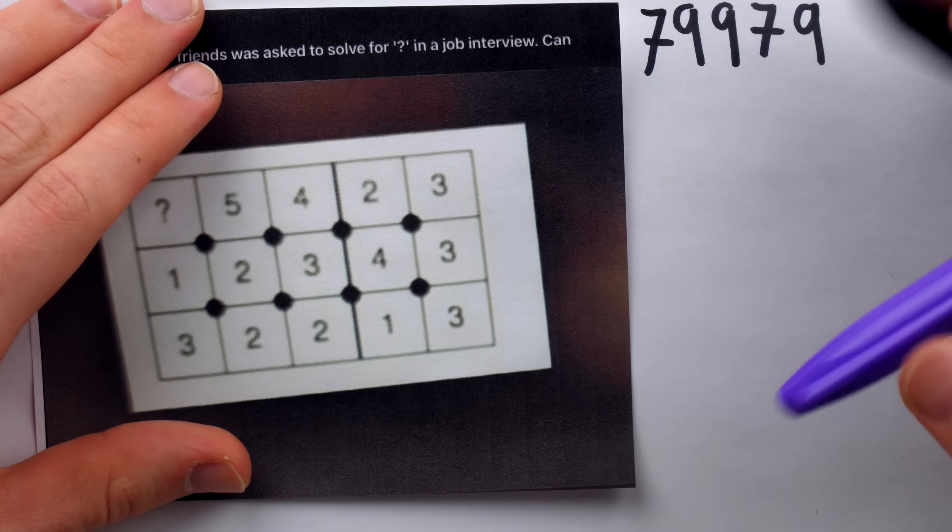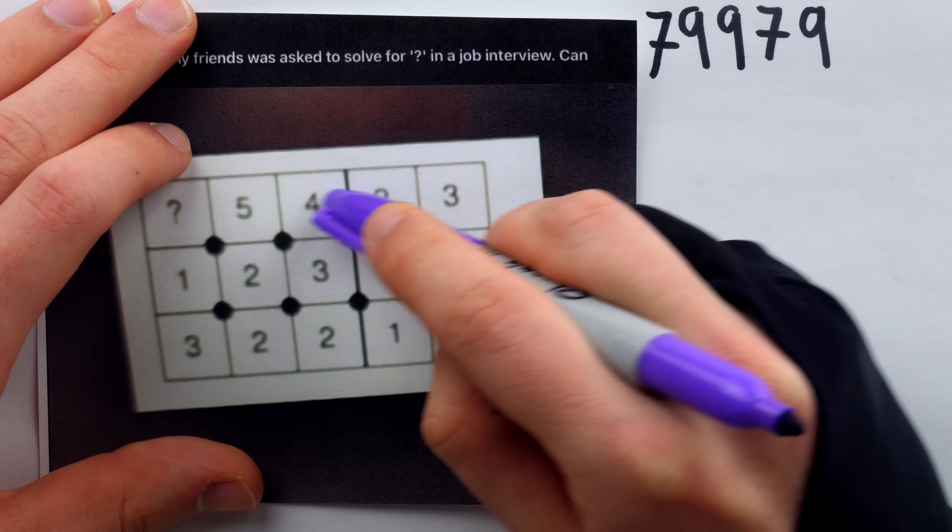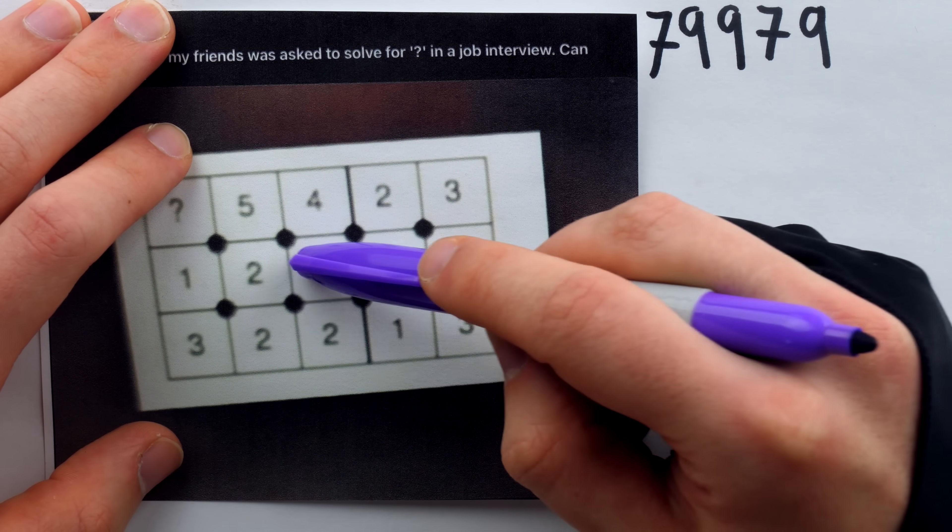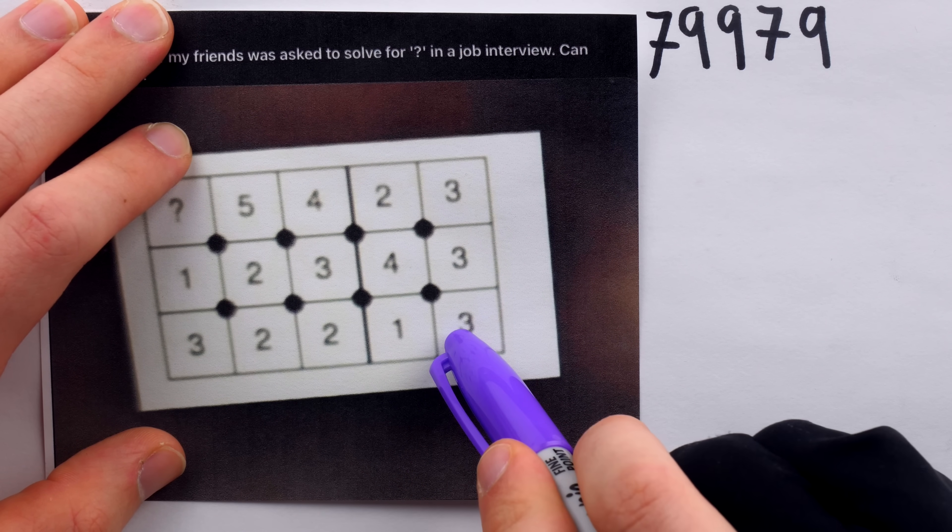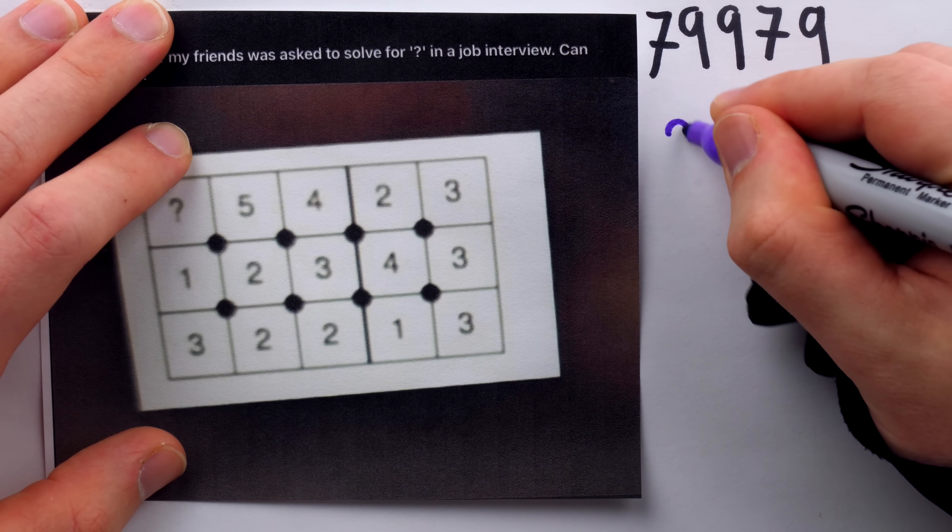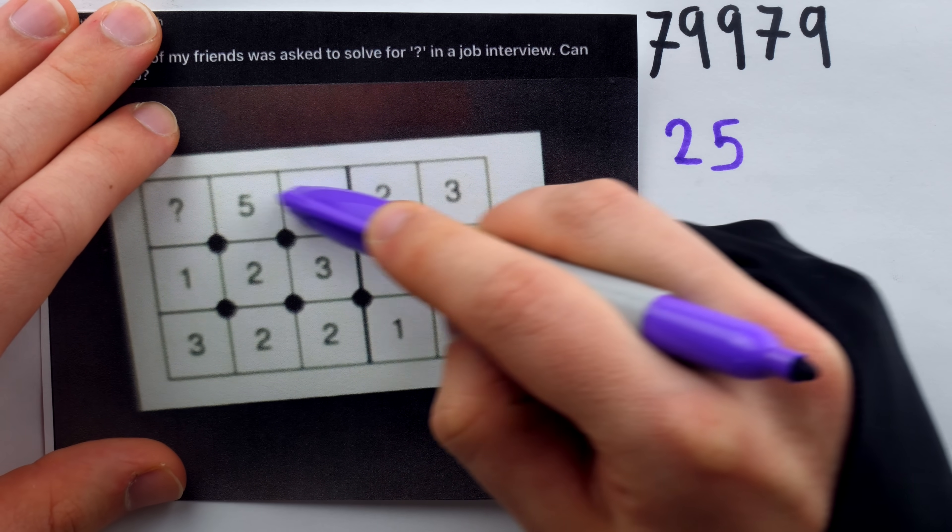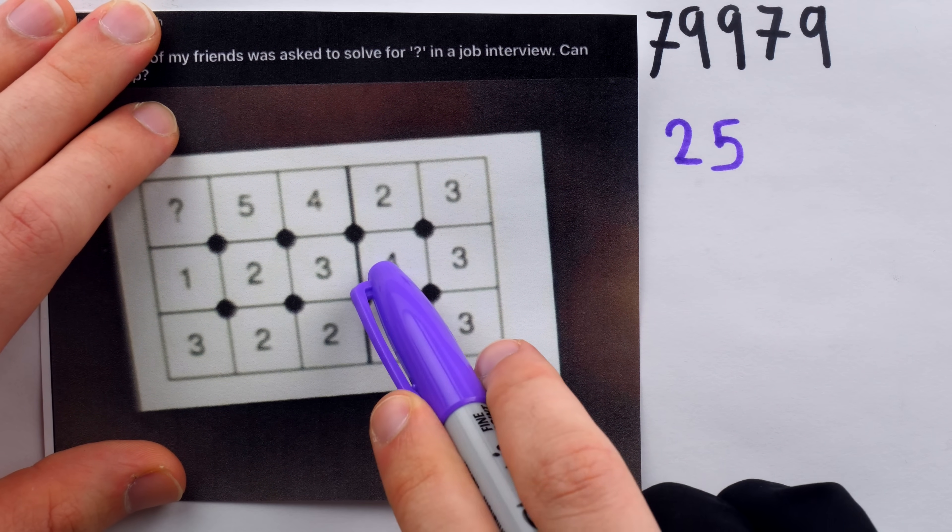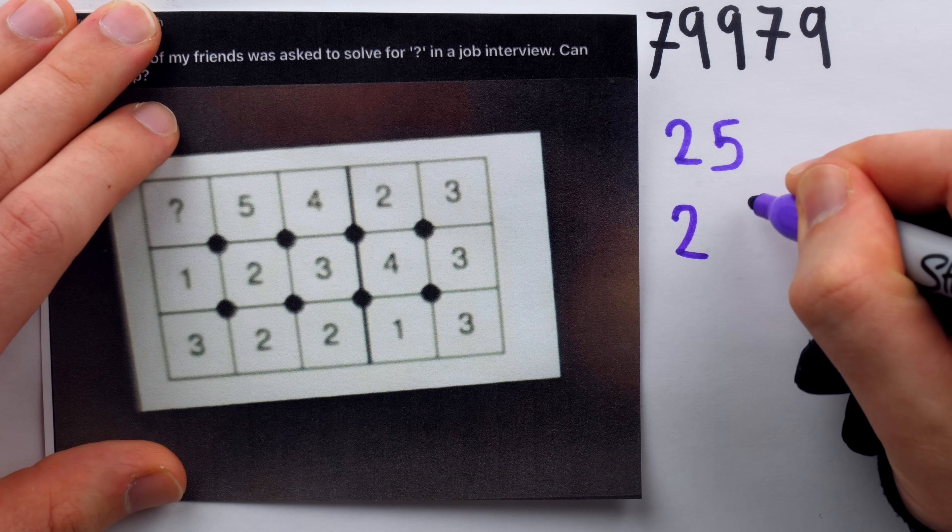So the first pattern I actually saw came from adding up 3 by 3 squares of numbers with those numbers outlined by the dots in the middles. For example, if again we start on the right side, add up this grid of 3 by 3 numbers. 4 plus 2 plus 3 is 9, 3 plus 4 plus 3 is 10, and 2 plus 1 plus 3 is 6, so it adds to 25. Then move on to the next 3 by 3 grid of numbers. 5 plus 4 plus 2 is 11, 2 plus 3 plus 4 is 9, and 2 plus 2 plus 1 is 5. Again, it adds to 25.